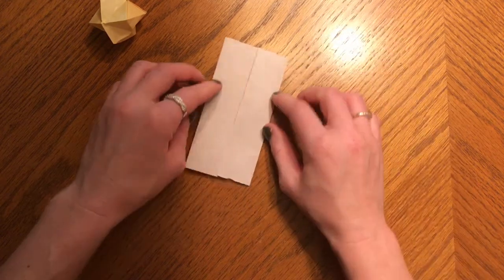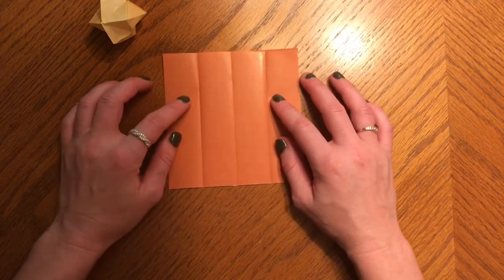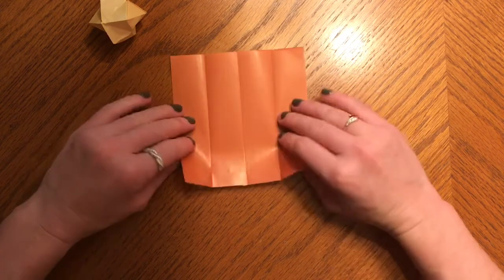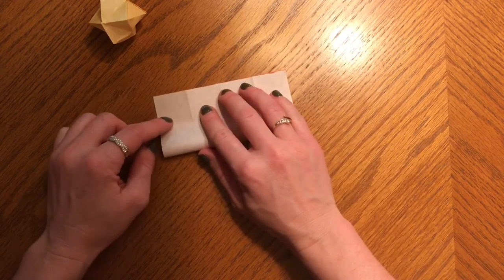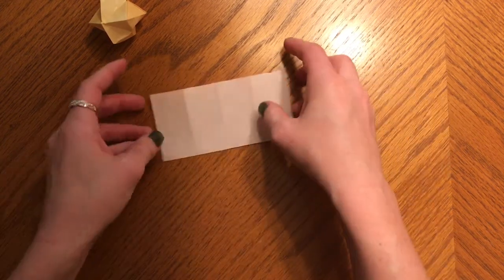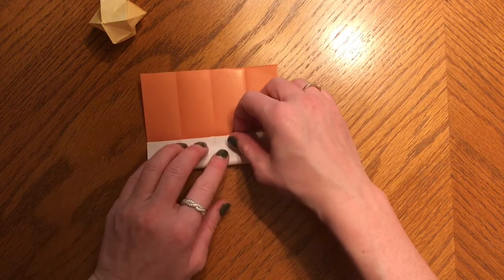Go over your creases so they're nice and sharp. Then unfold it, rotate, and you're doing the exact same thing on the opposite or a 90 degree turn. So book fold and then cupboard fold.